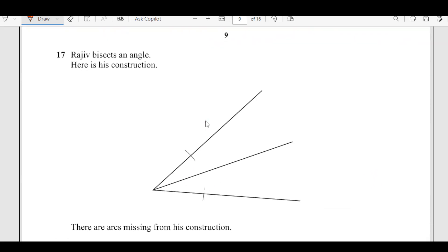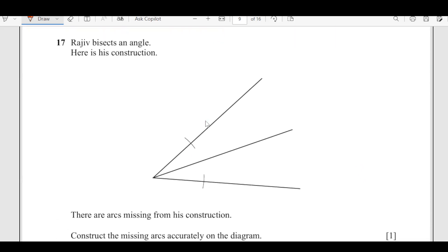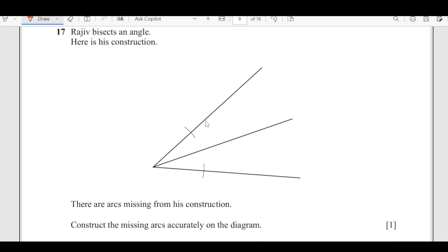Next, Rajiv bisects an angle. Here is the construction. There are arcs missing from this construction. Construct the missing arc accurately on the diagram. You will take your compass and place it over here, open this from here, draw an arc from point A and another one here same radius. Draw this arc from here.